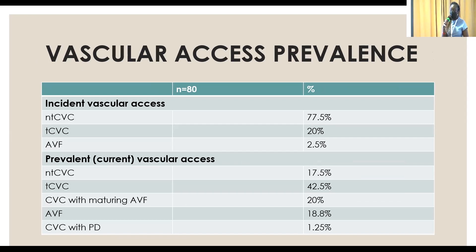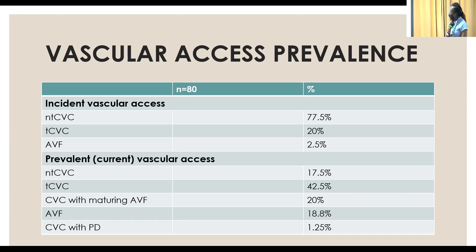When looking at the incident vascular access — the first access the patient had — most participants had a non-tunneled CVC. For the prevalent access at the time of data collection, the majority had a tunneled CVC. The AV fistula, which has been promoted as the favorable access since 2006, was quite low at 2.5%, and even after patients had been on dialysis for a while, AV fistulas were still tailing behind. The range of accesses each patient had during their dialysis vintage was 1 to 20, and the most common access overall was a non-tunneled CVC, followed by a tunneled CVC.